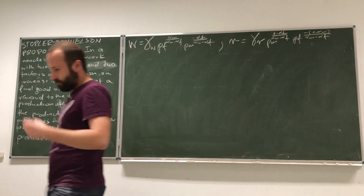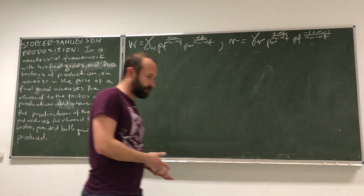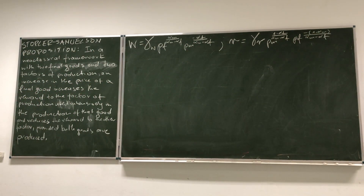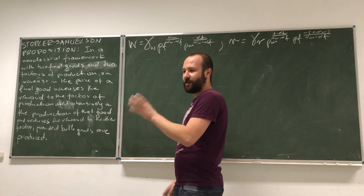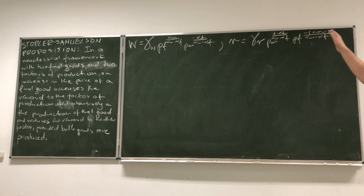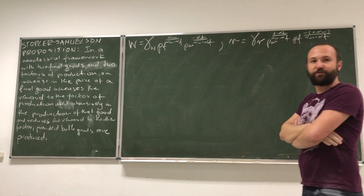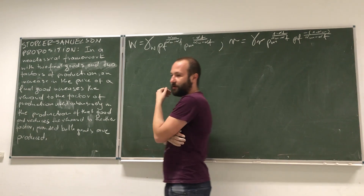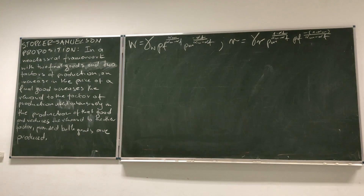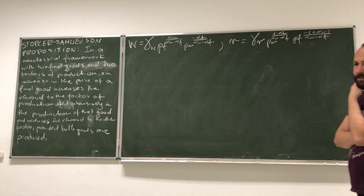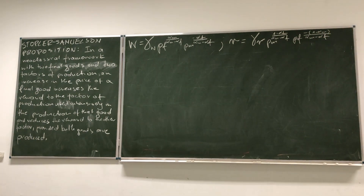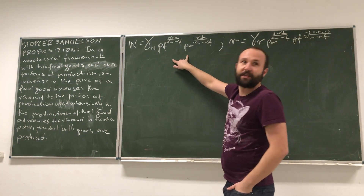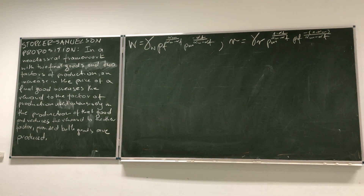Let's go back to the example we are dealing with. We've got two goods: manufacturers and food. According to the Stolper-Samuelson proposition, if the price of manufacturing is going up, rent should go up because production of manufacturers uses capital intensively, and wage should go down because production of manufacturers uses relatively less labor. On the other hand, if price of food would be going up, we would expect the wage to rise because production of food is labor intensive, while rent goes down.